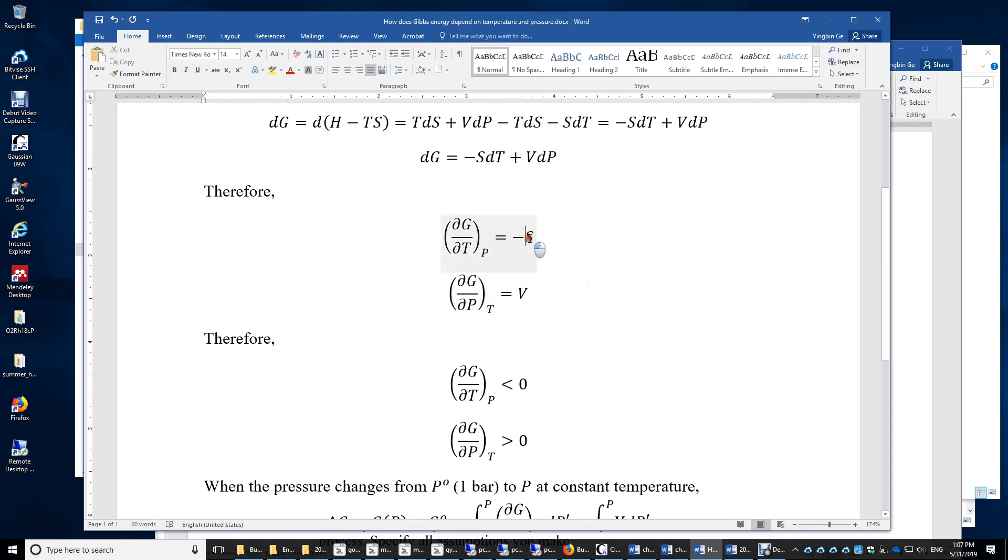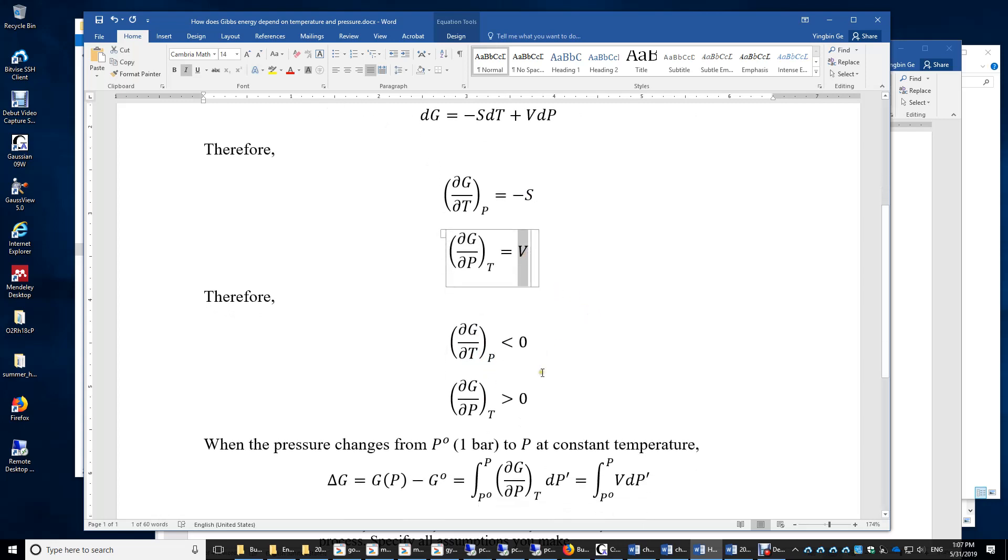And we know entropy is always greater than zero. Therefore, when temperature increases, G always decreases under constant pressure condition. Volume is always positive. Therefore, G always increases when P decreases.